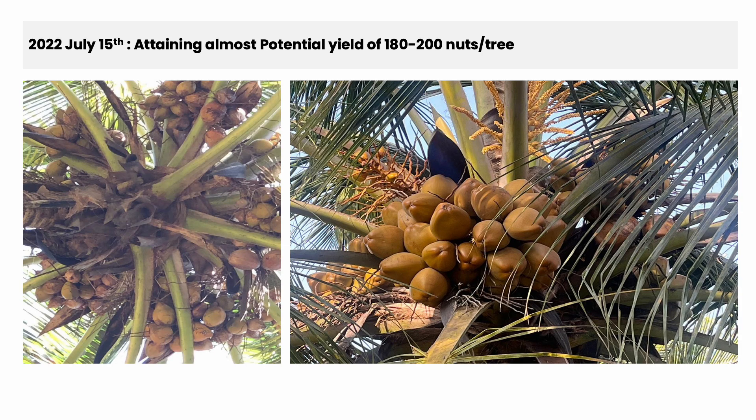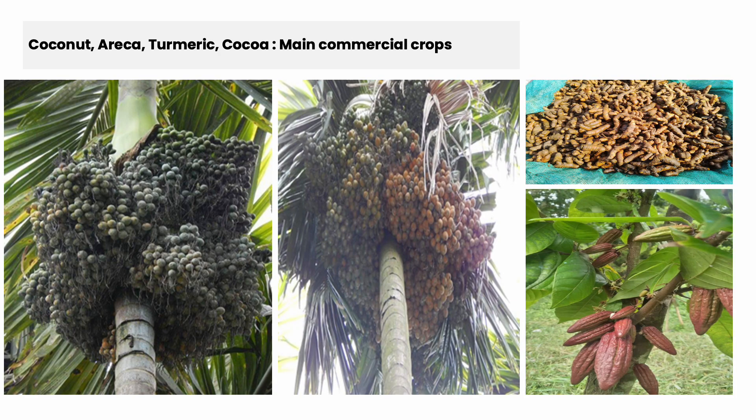This is called the potential yield — the variety attaining the maximum yield per acre or per unit area of land. We are now attaining almost 180 to 200 nuts per plant. Initially, back in 2017, it was something around 30 to 35 nuts. Not only arecanut — we are also getting fantastic yields of coconut, turmeric, and cocoa. A lot of commercial plants have been integrated into this system.